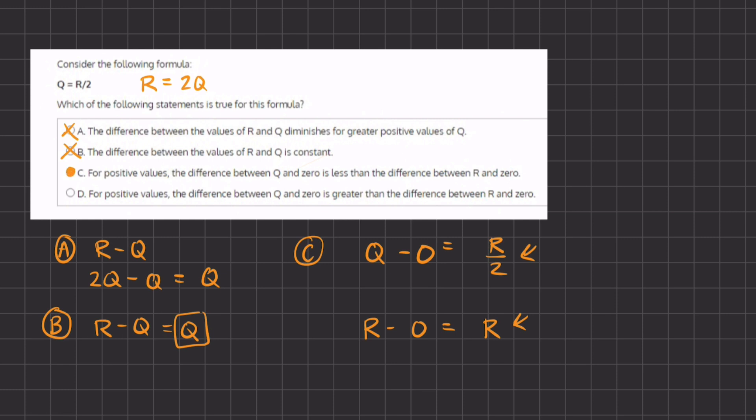Let's quickly take a look at why D is incorrect. For positive values, the difference between Q and 0 is greater than the difference between R and 0. This answer is exactly opposite to answer C, and therefore will be incorrect, because the difference between Q minus 0 is less than the difference between R minus 0.